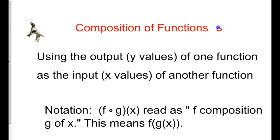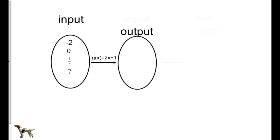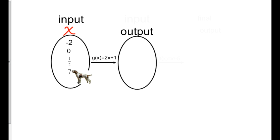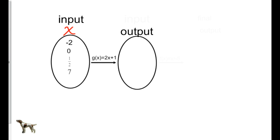Let me explain composition in a common sense way. I have what's called a mapping diagram. If I have a bag of input values, or x values — negative 2, 0, one half, and 7 — and I'm going to plug each one into this new equation, say g of x, this function 2x plus 1, I'll get an output for each one.